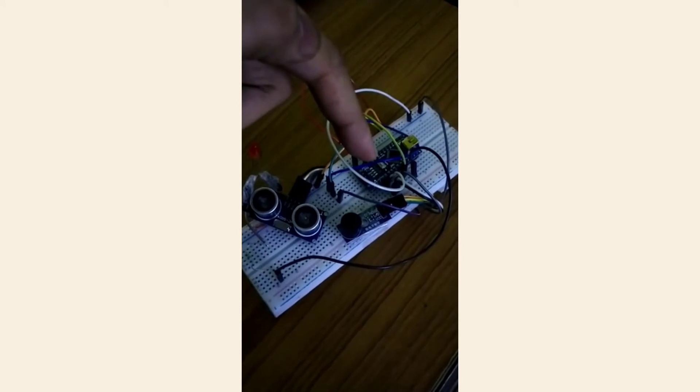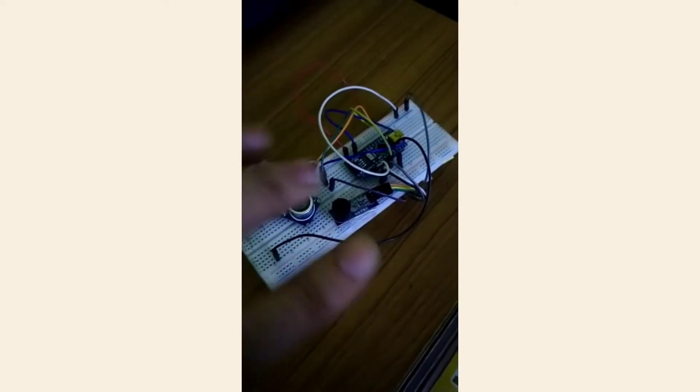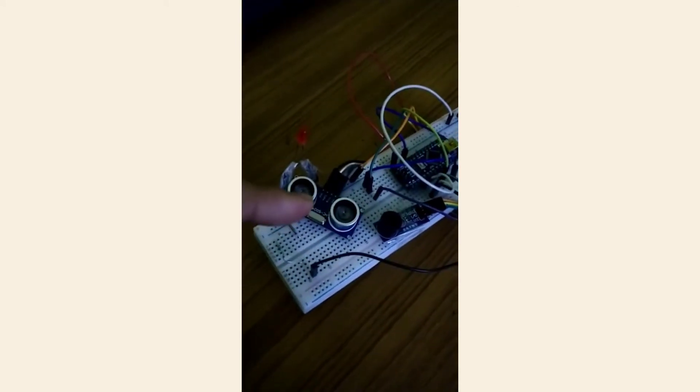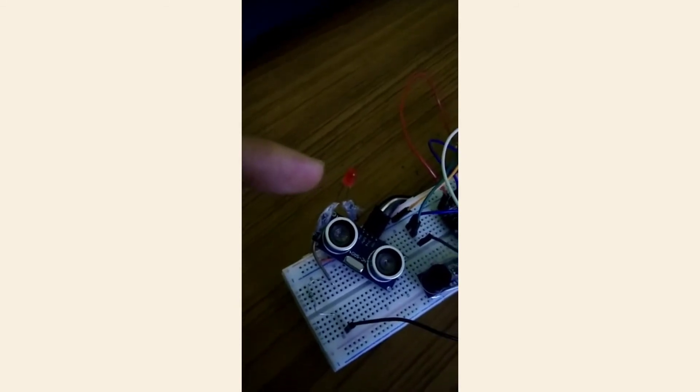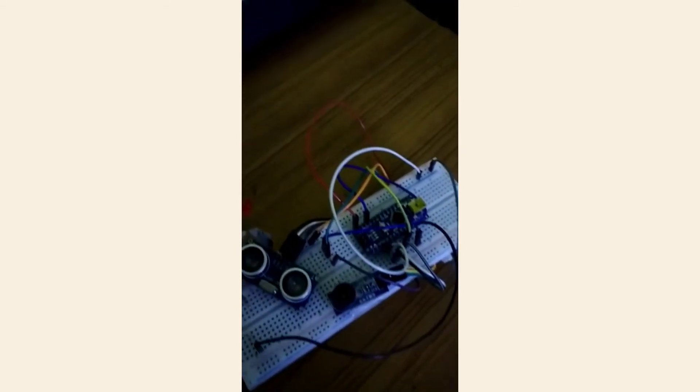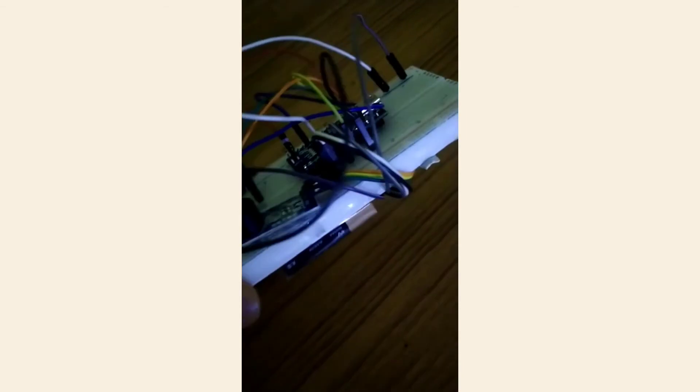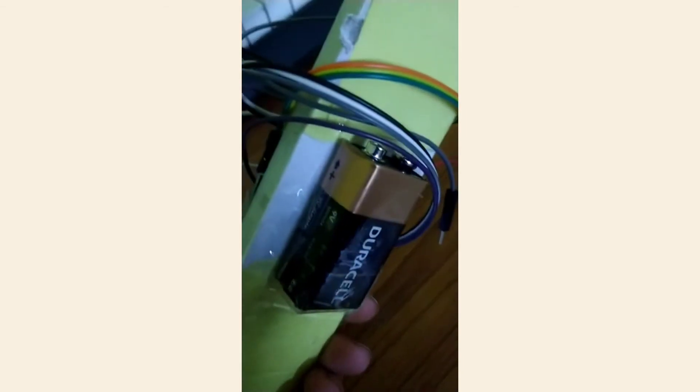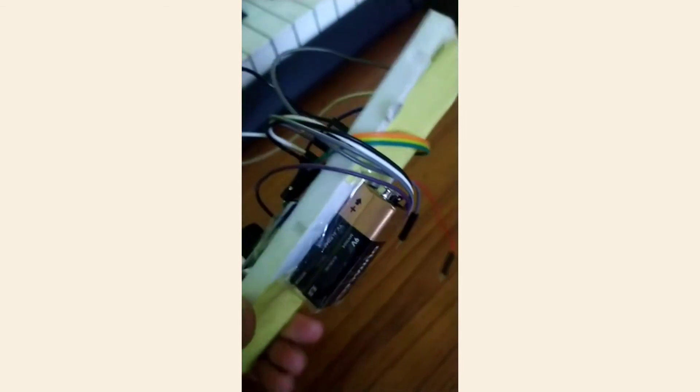So, as you can see, we have a breadboard on which our whole circuit is formed. This is the Arduino Nano board. This is the ultrasonic sensor and the LED. This is the 3-pin buzzer attached to our board and all the components are connected through different wires. The circuit is powered by a 9-volt battery attached to the back of the board.